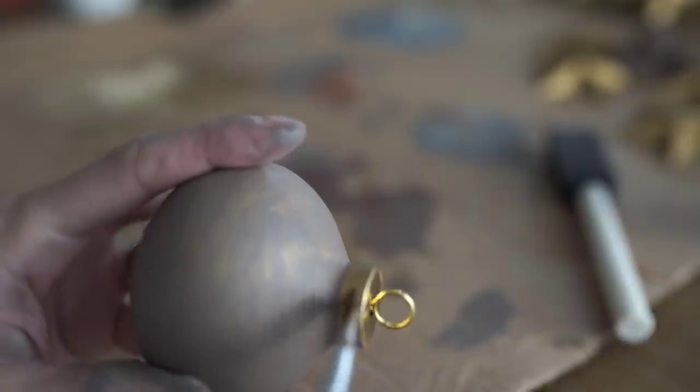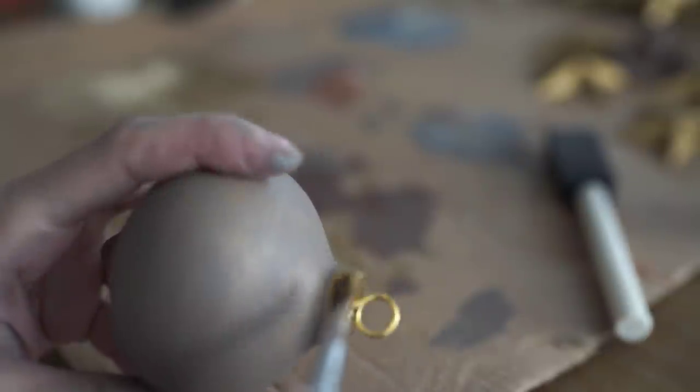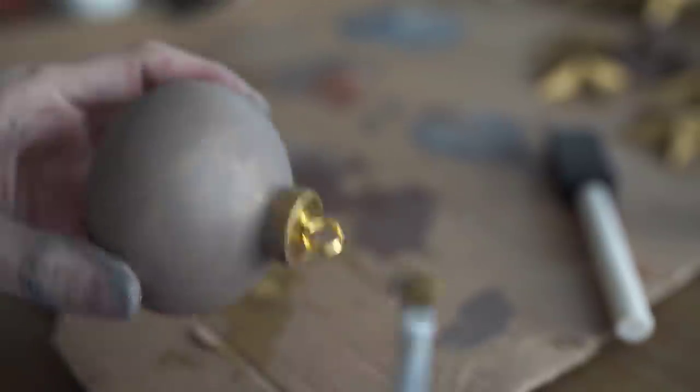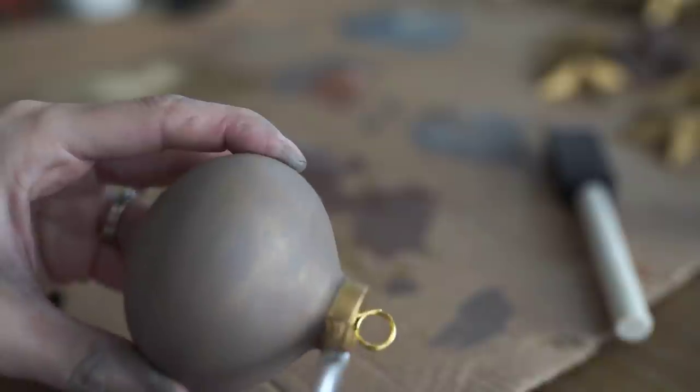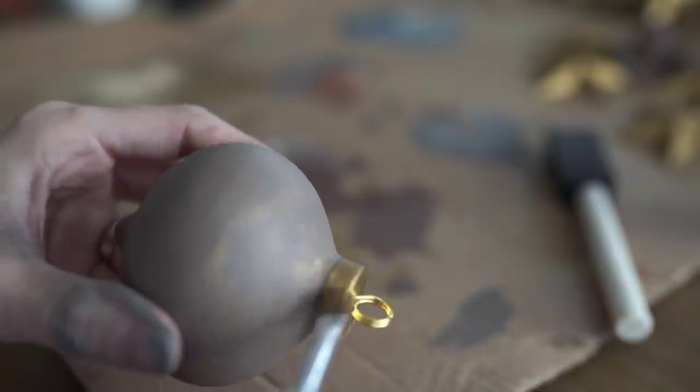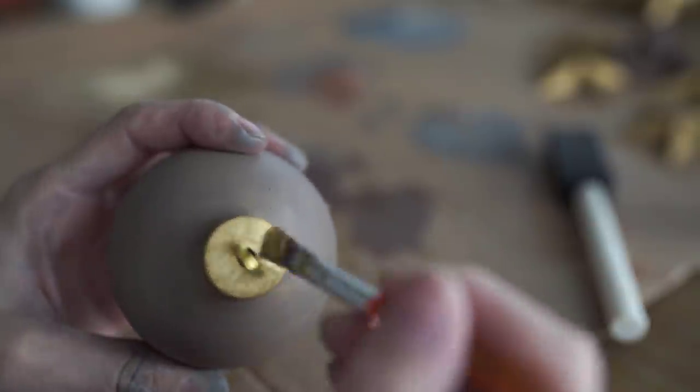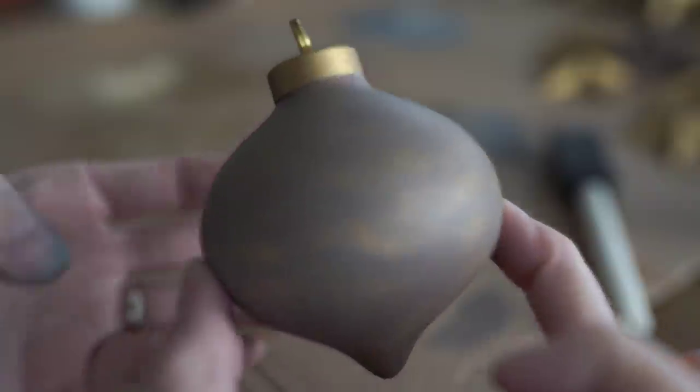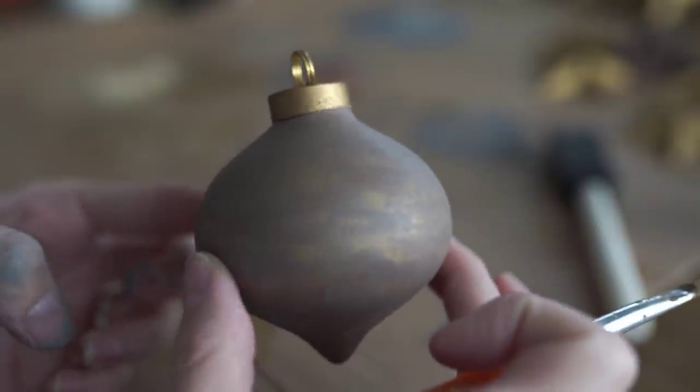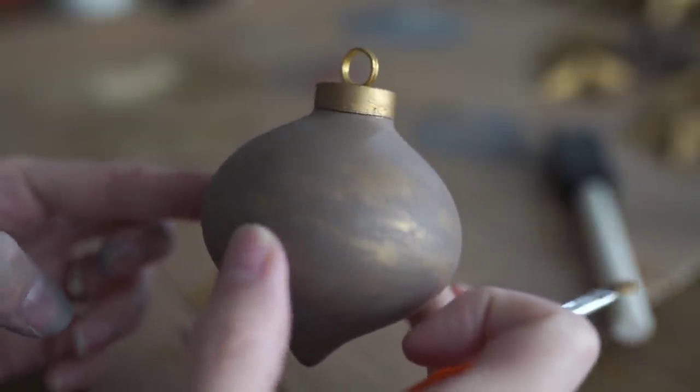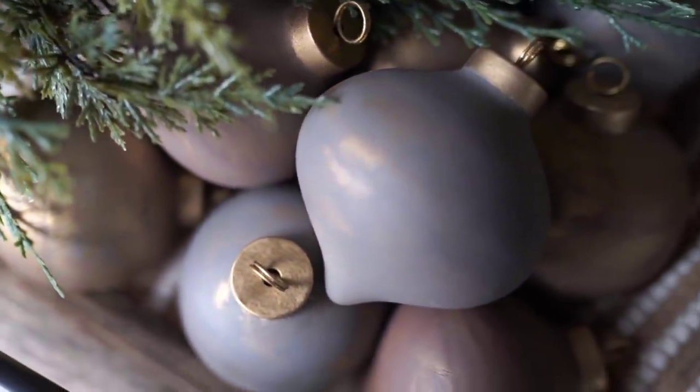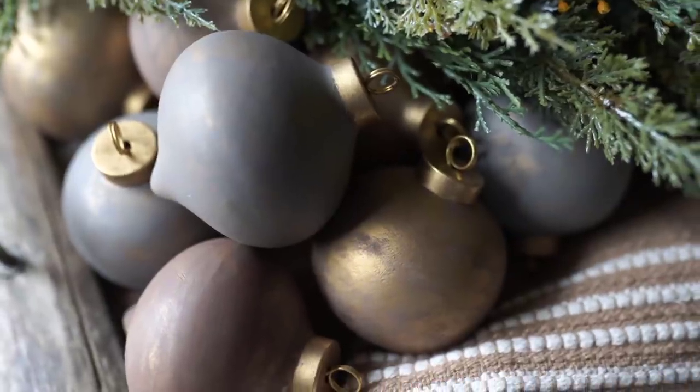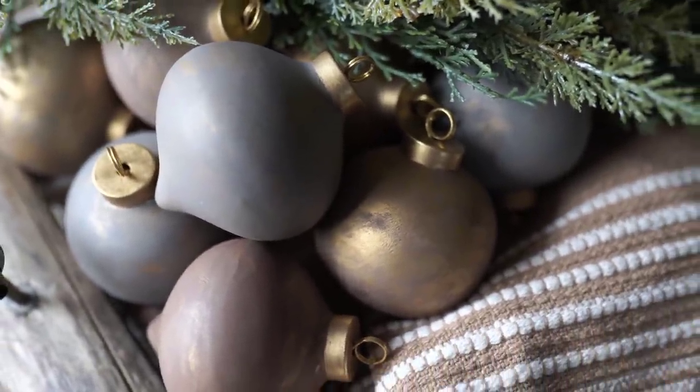These are really neat. I was not expecting these to turn out as good as they did. And I'm so glad that I tried this DIY. I feel like they almost look a little bit like a mercury glass, but I really like the colors with the gold kind of peeking out. I feel like the browns, a little bit of blue, that goldish color is just really pretty.